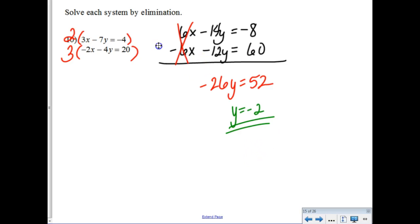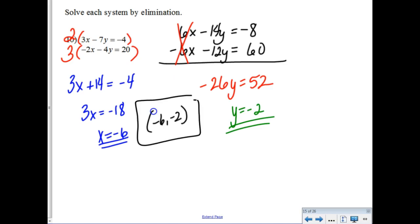So, anyone have a favorite equation from the beginning? Hmm? Got one? Okay. 3x minus 7 times negative 2 is plus 14. Subtract 14. And x is negative 6. So, ordered pair notation would be negative 6, negative 2.